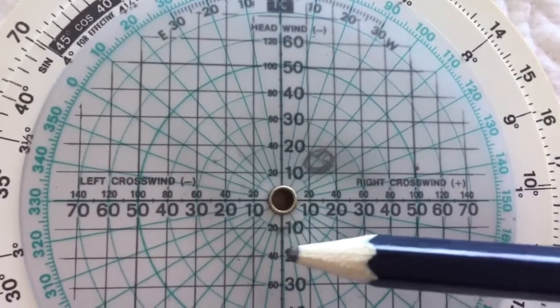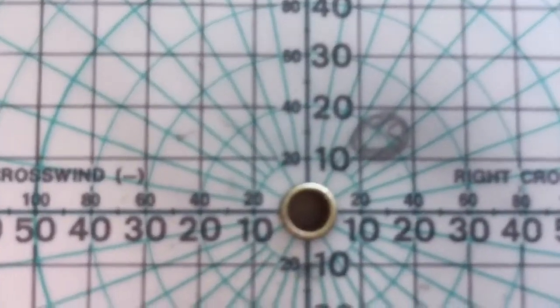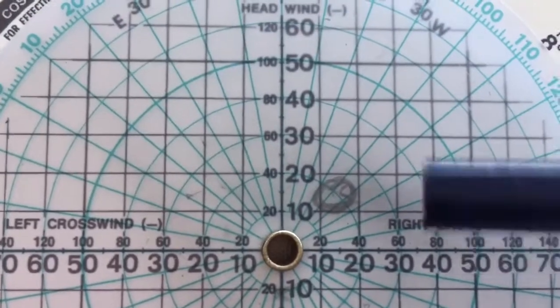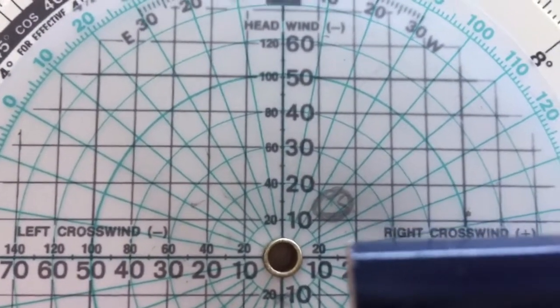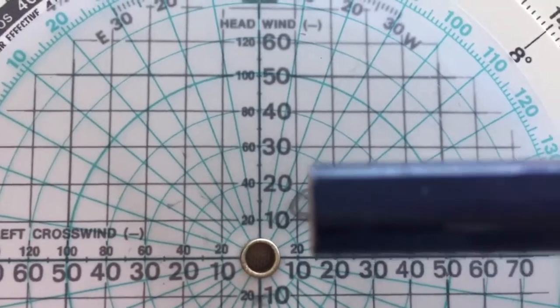If it was back here that would be a tailwind. So in this case that is going to equal around 15 knots of crosswind from our right and around 13, 14, maybe even 15 knots of headwind.